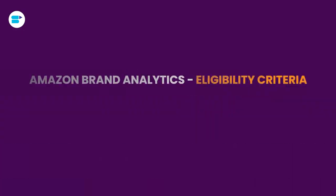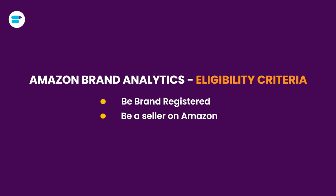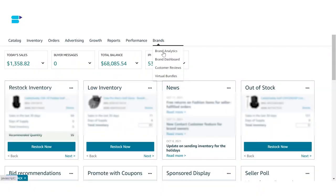Now let's talk about the eligibility criteria to access this powerful tool. You need to fulfill two criteria: first, you have to be brand registered on Amazon, and second, you have to be a seller on Amazon. Most of you watching are likely already eligible. If you followed our previous steps and cannot find Brand Analytics under the dropdown menu, that means you are not brand registered yet or are in the process of getting brand registered — give it some time and Amazon will have that available for you.